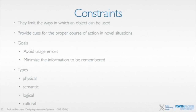That also reduces the amount of information you need to remember, because if something isn't available to choose, I don't need to remember that this would not be the right thing to do. There are various different ways of doing constraints: physical ones, semantic, logical, cultural.